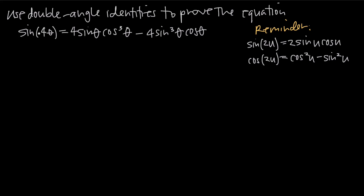If we start by just working on the left-hand side, we won't bother rewriting the whole right-hand side. Sine of 4 theta we can rewrite as sine of 2 times 2 theta. We just factored out a 2 — obviously 2 times 2 theta is 4 theta, so we haven't changed the value of the angle at all, but now we've got a 2 pulled out in front.